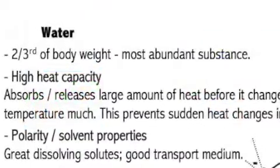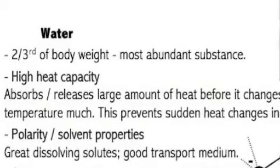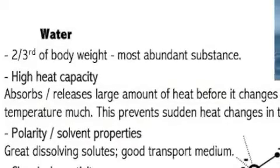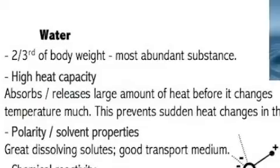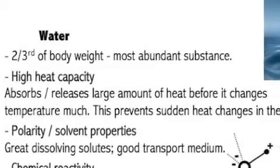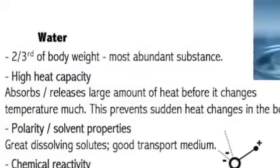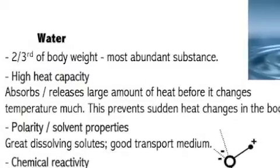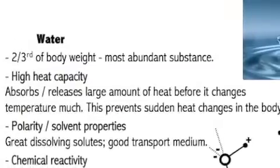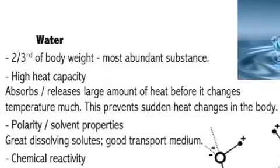Water is the most abundant substance in the body. It has a high heat capacity, which means it can absorb or release large amounts of heat before it changes its temperature much. This prevents sudden heat changes in the body.